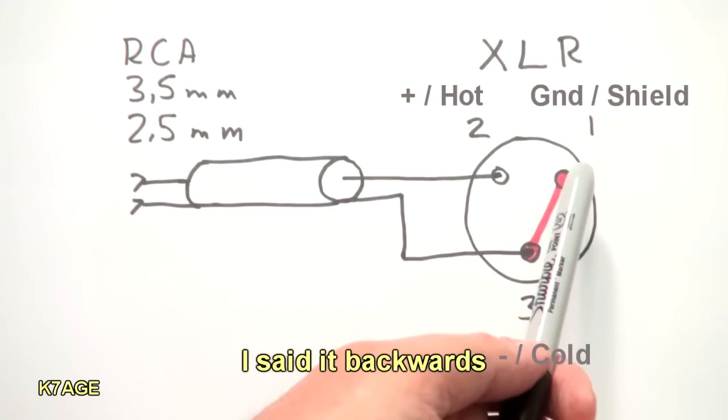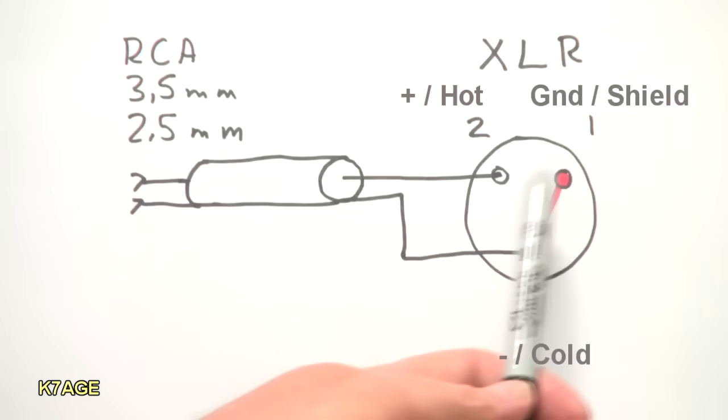So now the amplifier and the mixer will amplify the difference between pins 1 and 2 and 1 is actually also connected to 3. So this is how you go from an unbalanced to a balanced using an XLR connector.